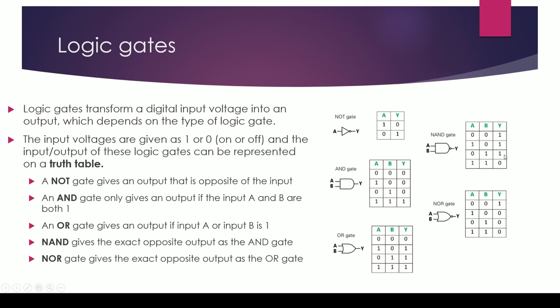Now the NAND gate is basically just the opposite of an AND gate. If you've got the truth table for an AND gate here, basically a NAND gate is the complete opposite of that. So instead of the output being given if the input A and B are both 1, it's the opposite of that now.